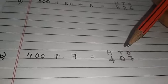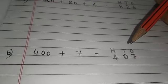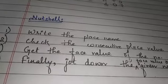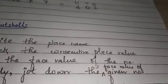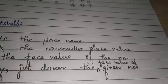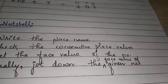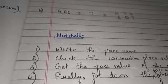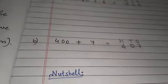So every time you are going to check their consecutive place values. Number 2, we have done. Number 3: get the face value of the number. Face value means face value equals the number name.